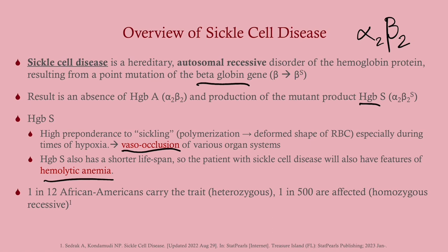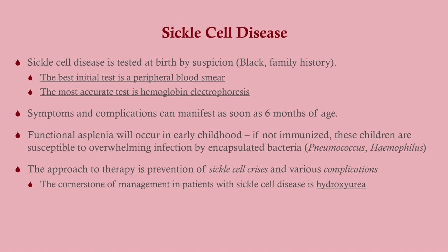Epidemiology: in the United States, one in 12 African Americans carry the trait, and by simple Mendelian genetics about one in 500 are affected. We test for sickle cell disease at birth, so it's typically not something presenting on differential. If testing is needed — for instance if someone wasn't diagnosed at birth — the best initial test is a peripheral blood smear where you'll see sickle cells. However, the most accurate test is hemoglobin electrophoresis, which will show the abnormal beta globin protein.